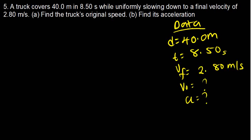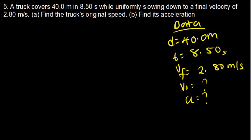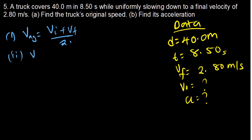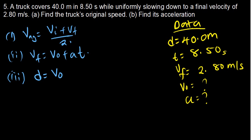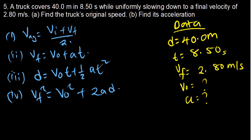We have four kinematic equations which you need to be familiar with. The first is average velocity equals initial speed plus final speed divided by 2. The second: final velocity equals initial velocity plus acceleration times time. The third: displacement equals initial velocity times time plus half times acceleration times time squared. The fourth: V-final squared equals V-initial squared plus 2 times acceleration times displacement. We just want to see how to apply them.